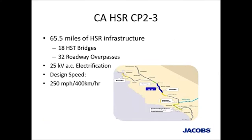The California High-Speed Rail Project is the story of segments within stages. The whole project involves connecting four major cities in California — Sacramento, San Francisco, LA, and San Diego — with the first true high-speed rail in America. The current stage is the corridor between Fresno and Bakersfield, and the segment we're working on is CP23, a 65-mile stretch from Fresno County to Tulare County. This segment involves 18 bridges carrying high-speed rail trains and 32 roadway overpasses, designed for a northbound and southbound track with 250-mile-an-hour trains. The operating speed is about 220 miles an hour.